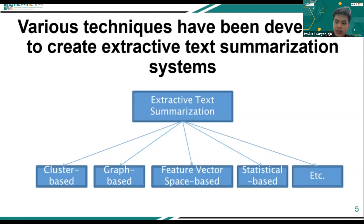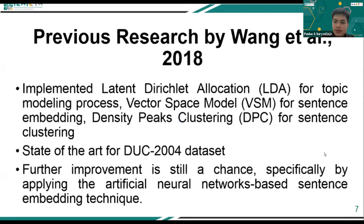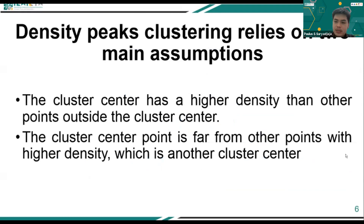Cluster-based summarization converts the input text into semantic class-based vector representation, clusters the input text, and then creates a summary by taking the sentence representing each cluster region. One of the clustering techniques used for text summarization is density peaks clustering. Density peaks clustering has two main assumptions: the cluster center has higher density than other points outside the cluster center, and the cluster center point is far from other points with higher density, which are another cluster center.